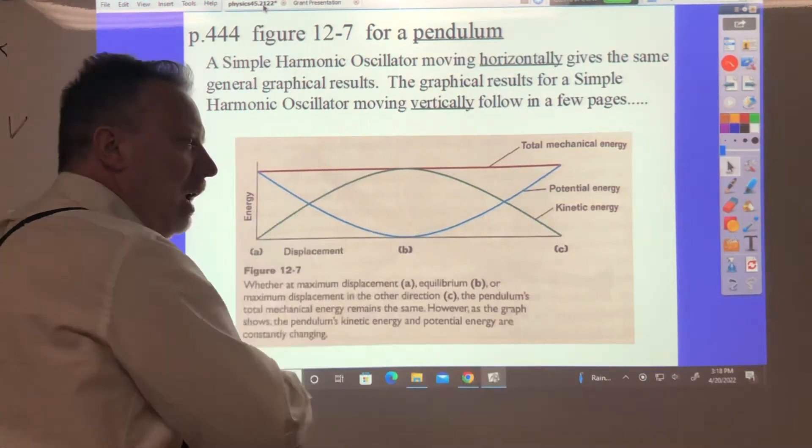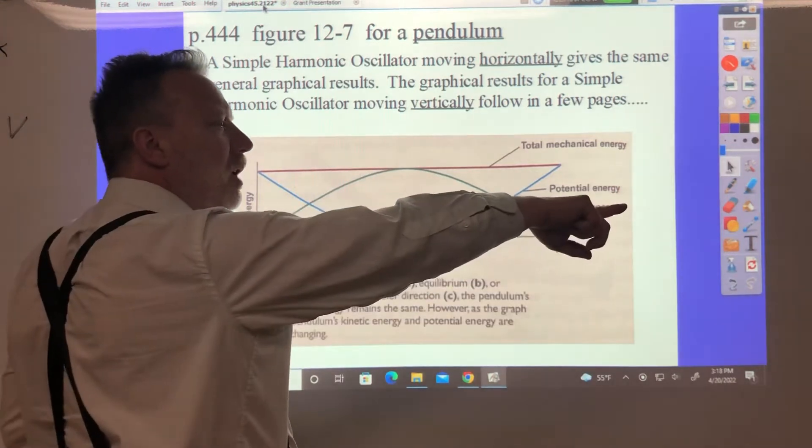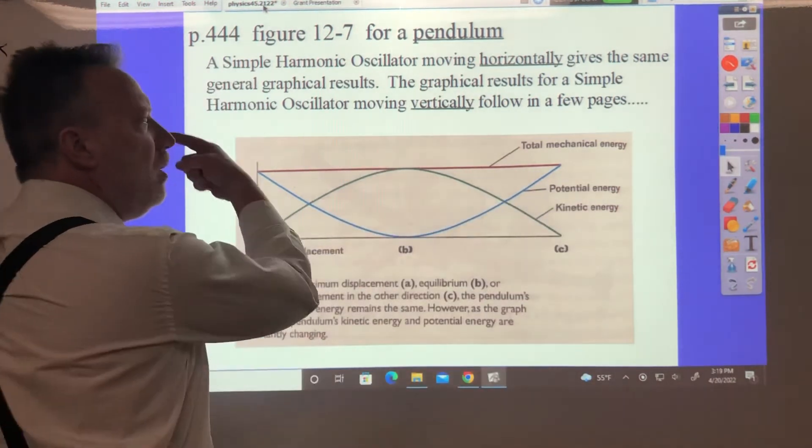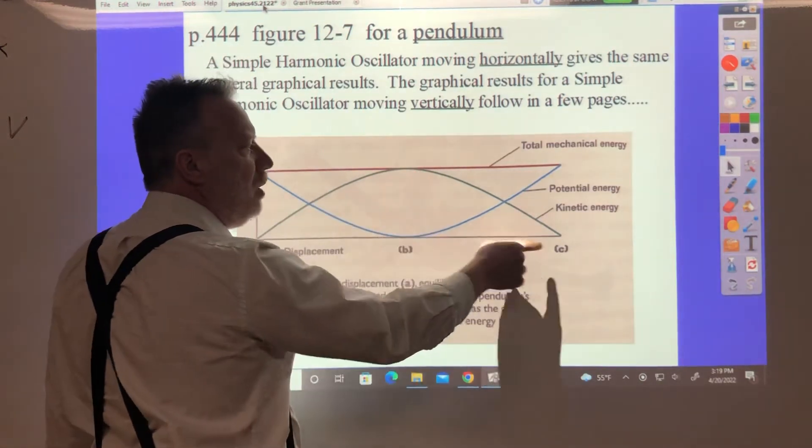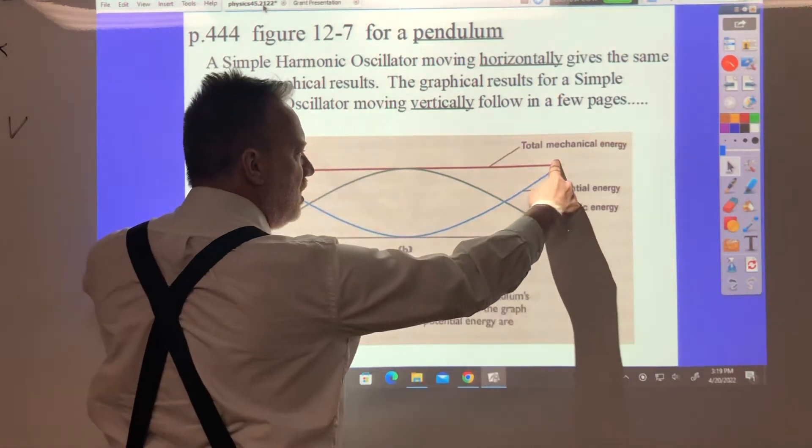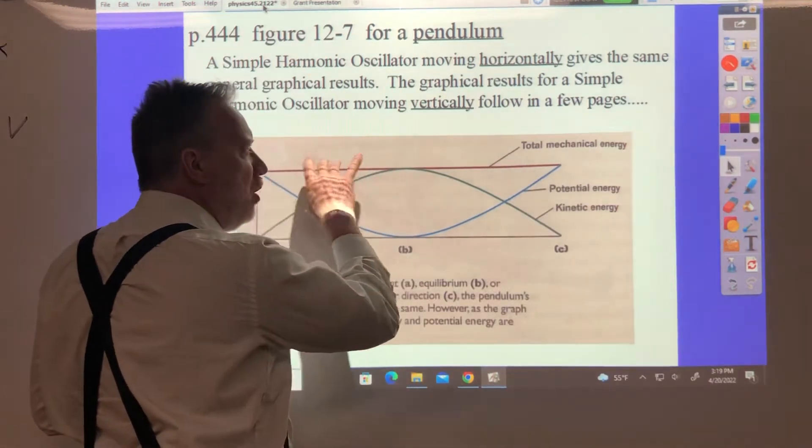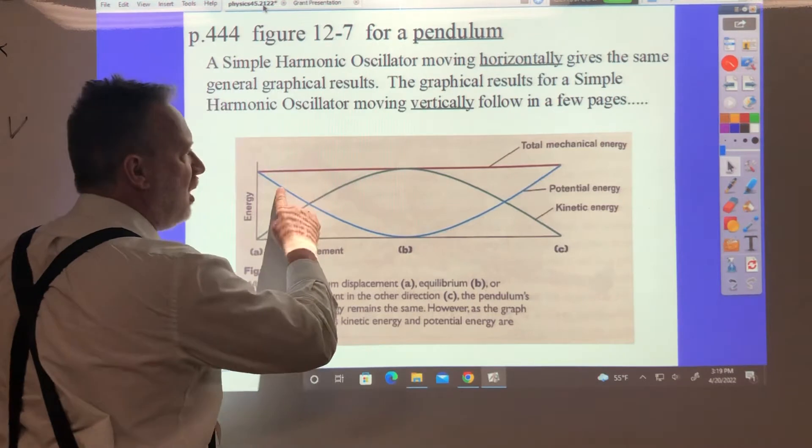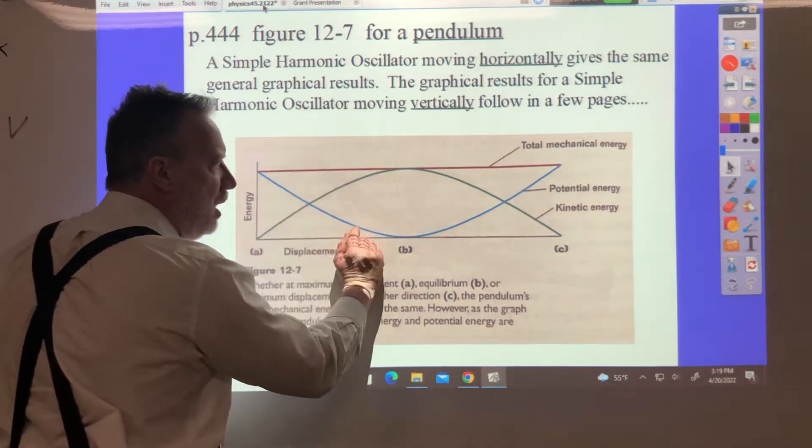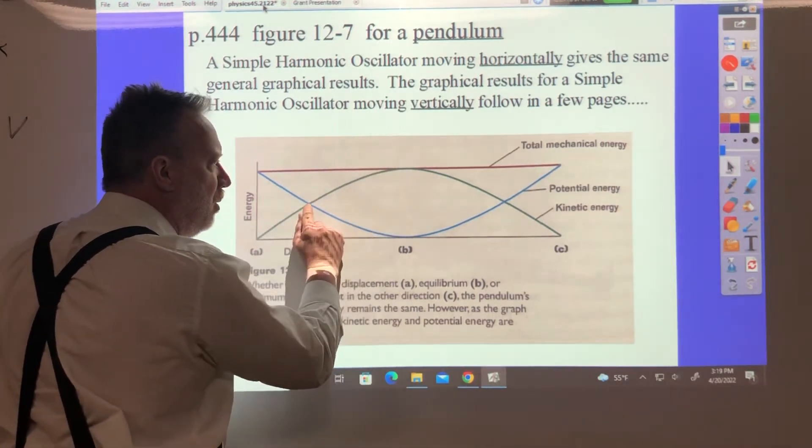On page 444 they give a figure for a pendulum swinging back and forth. On one end it's got potential energy, in the middle it's kinetic, on the other end it's potential energy, in the middle it's kinetic. Kinetic energy is high in the middle, low on the ends. Potential energy is high on the ends, low in the middle, and the total mechanical energy remains constant. Blue plus green gives you the total. The total mechanical energy stays constant with no friction.